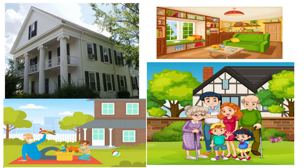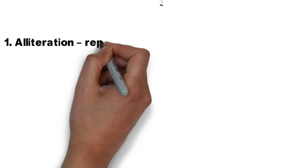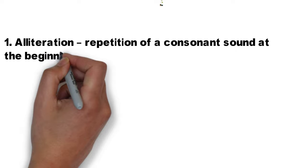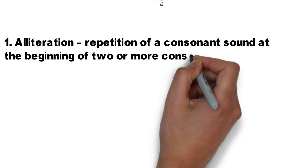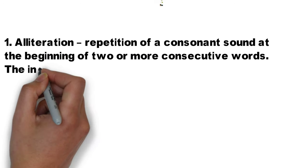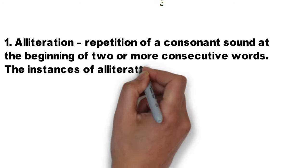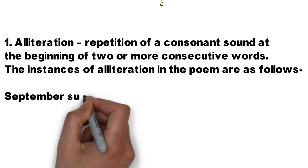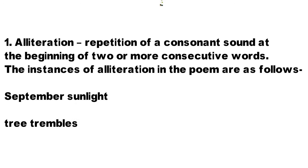Let's see the poetic devices. First, Alliteration — repetition of a consonant sound at the beginning of two or more consecutive words. In the poem: 'September sunlight' and 'tree trembles' — this is alliteration.